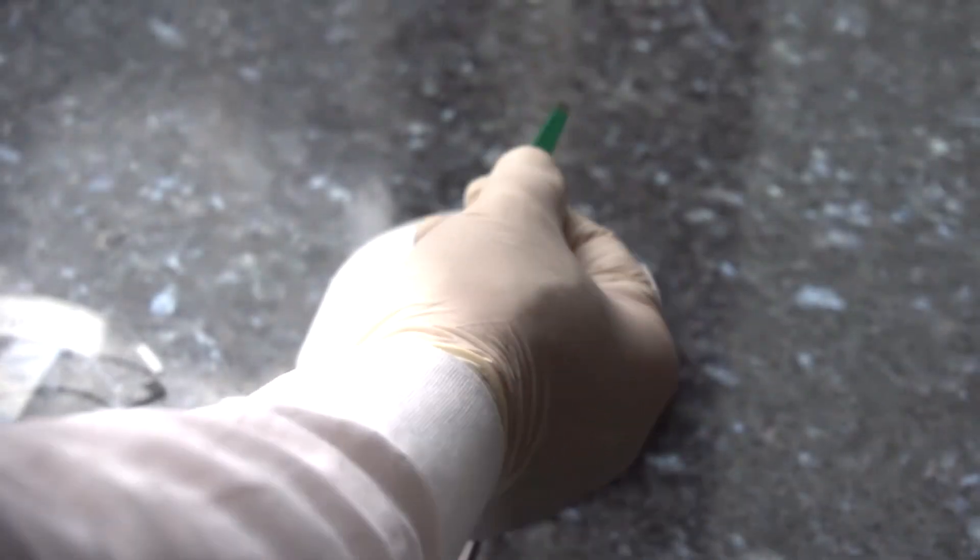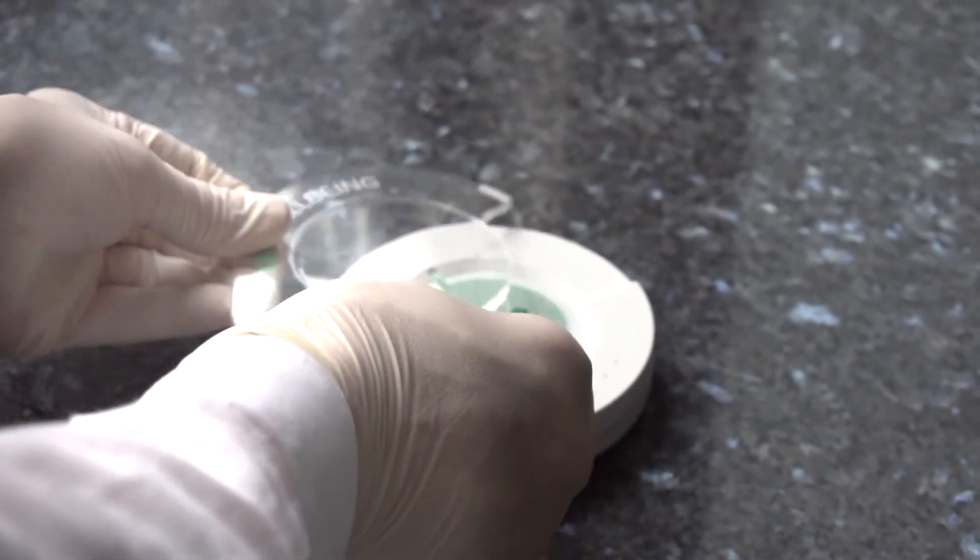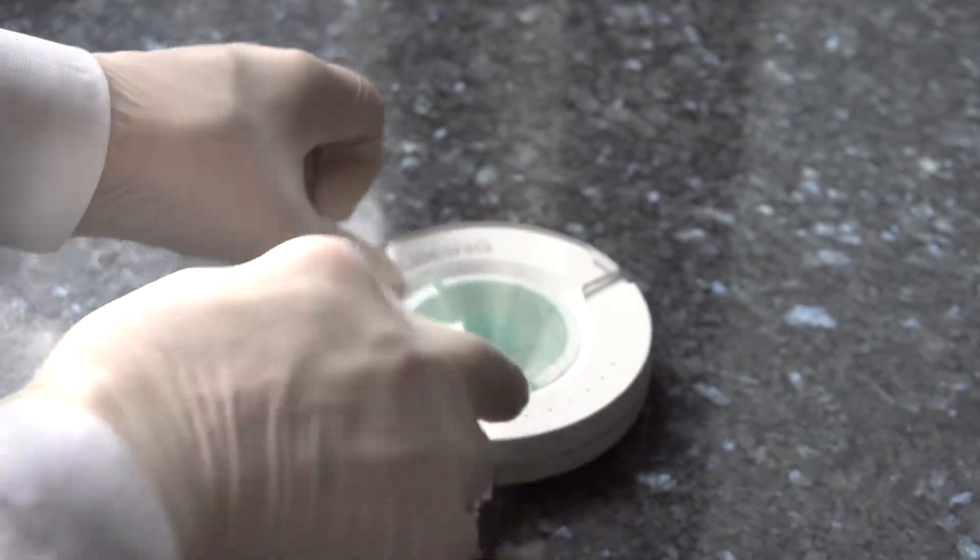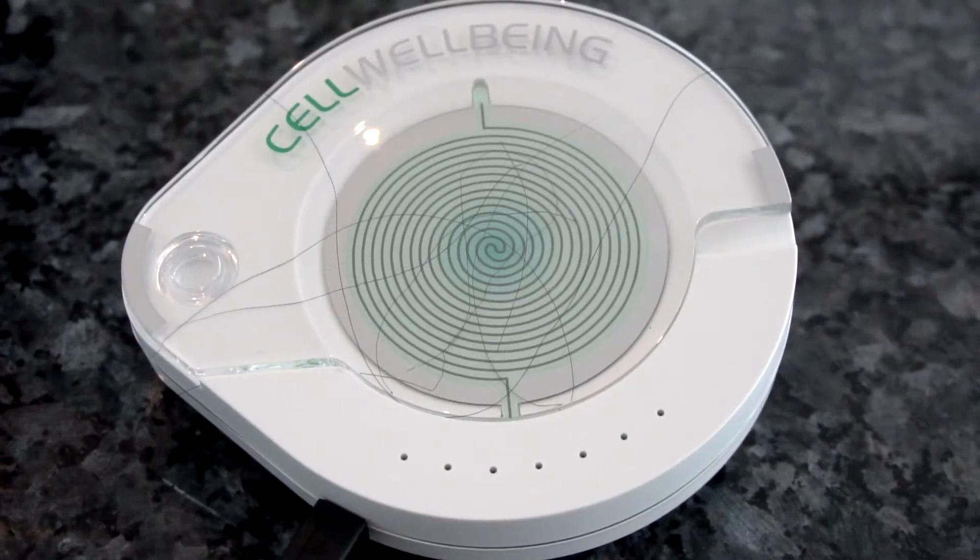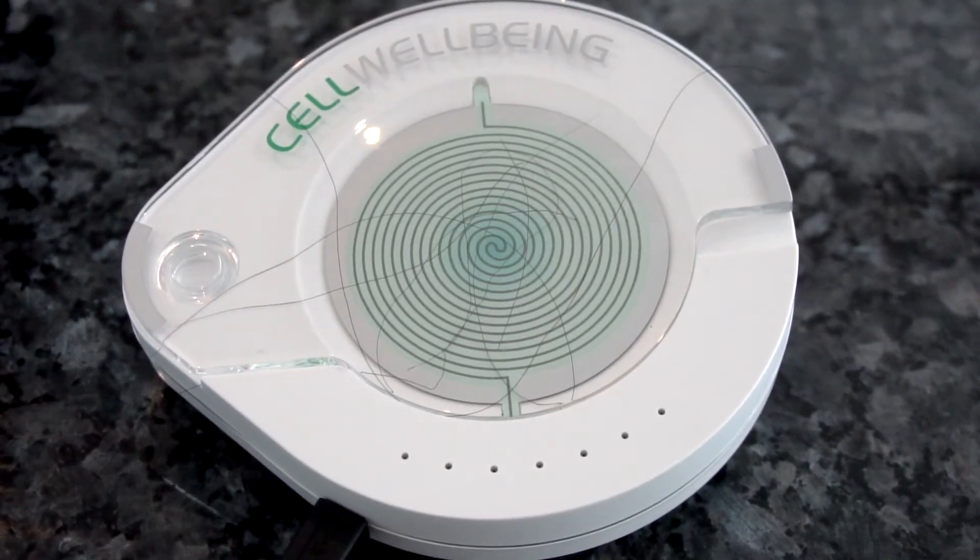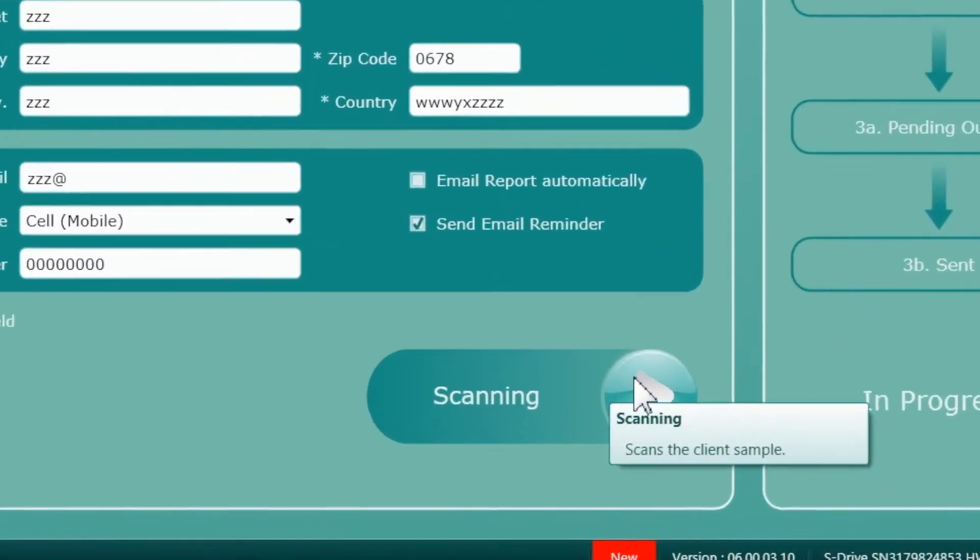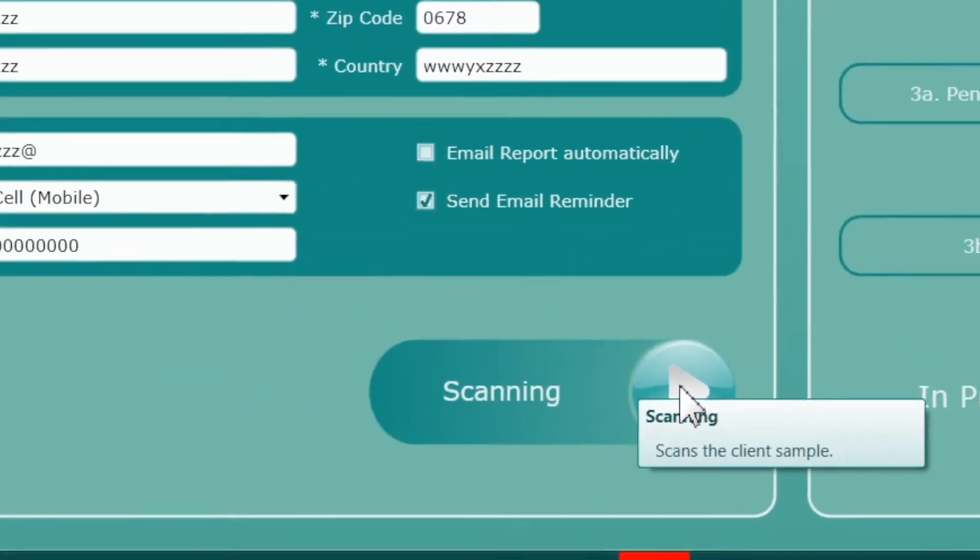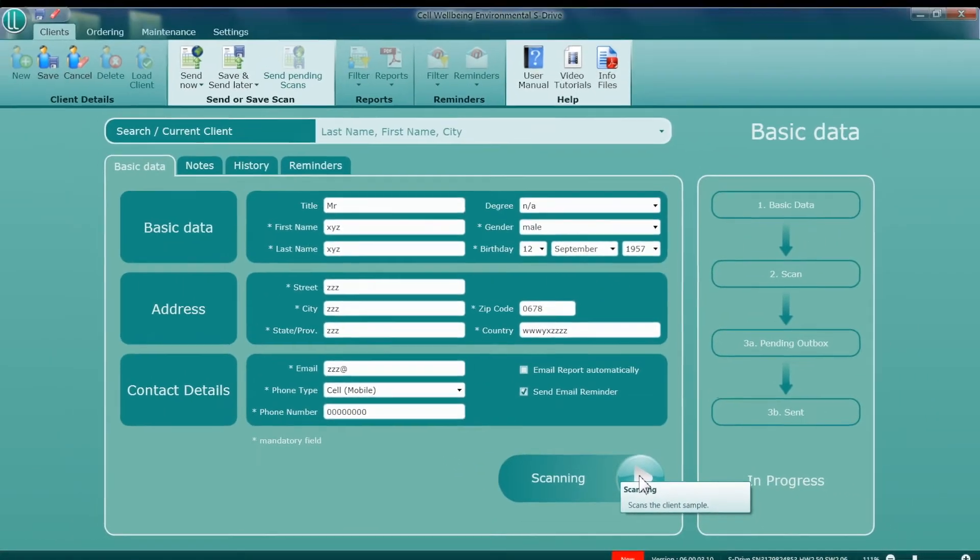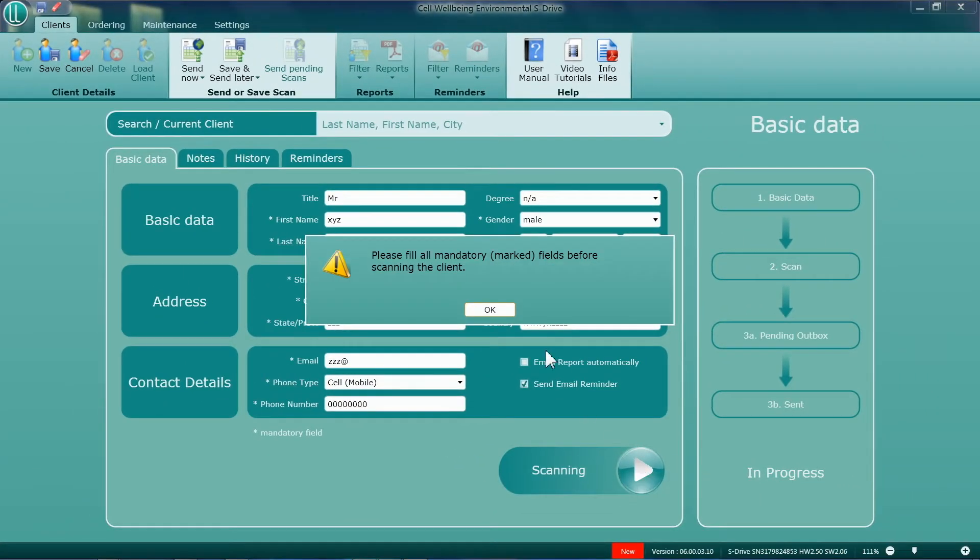Immediately place the hairs with their roots onto the center of the S-Drive Spectrum Coil, then cover the hair and roots with the clear lid. Next, click the scan button shown just under the client's details. This must be completed within three minutes after plucking the hairs.